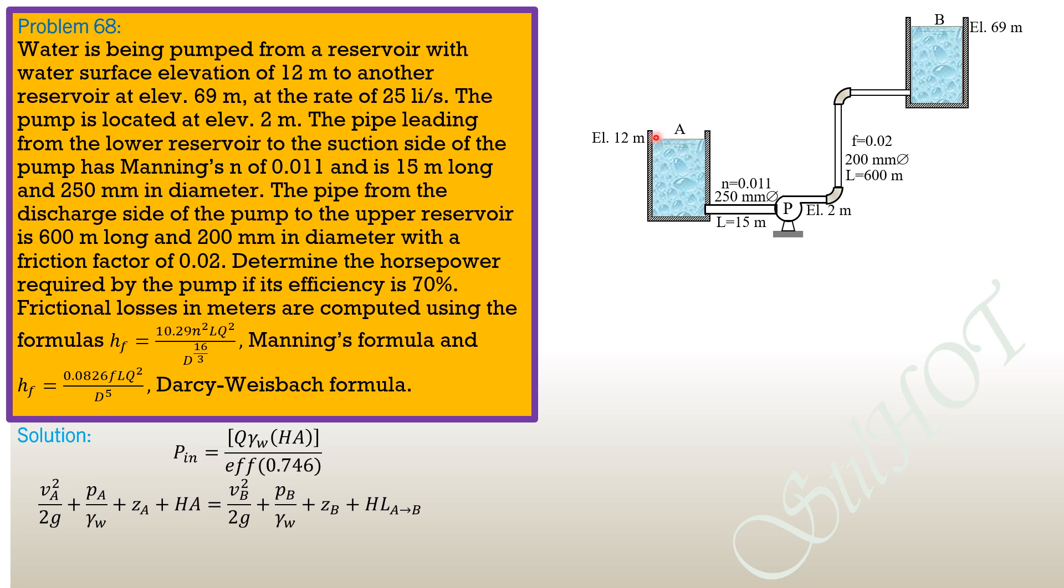Velocity head at A is negligible because this is the water surface in the reservoir. Pressure head at A is zero, exposed to the atmosphere. Elevation head at A is 12 meters—let's select the datum at elevation zero. Head added is unknown. Velocity head at B is also negligible. Pressure head at B is zero, exposed to atmosphere.